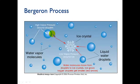So to illustrate the Bergeron process, we have this high vapor pressure around the droplets and we have this net movement to the low vapor pressure region around the ice. And so the ice crystal grows and the water droplets shrink.